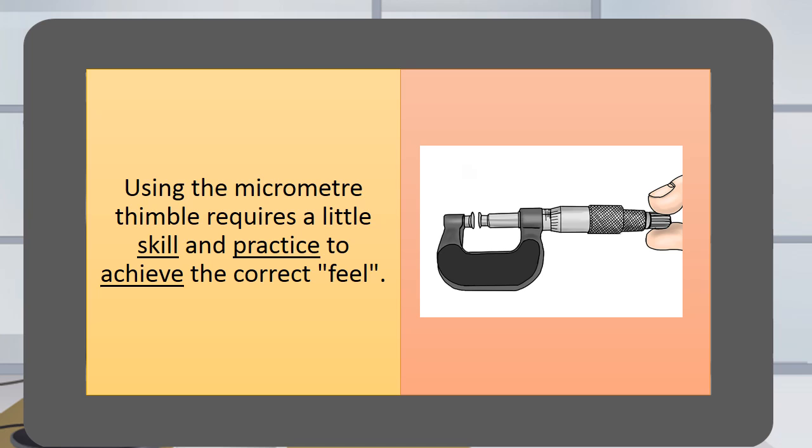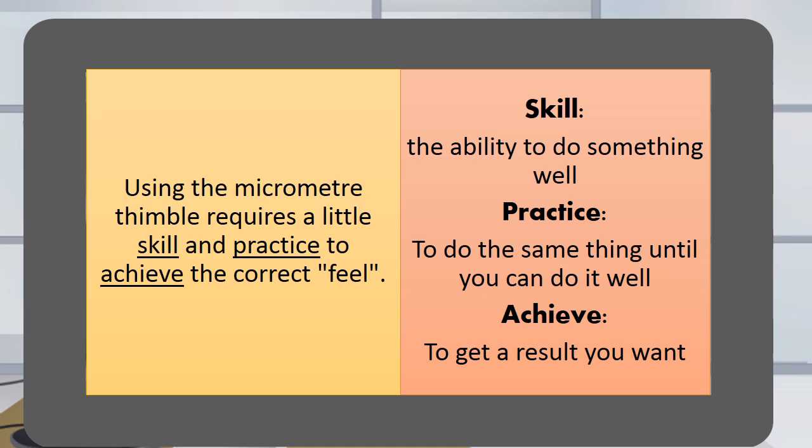Using the micrometer thimble requires a little skill and practice to achieve the correct feel. Skill is the ability to do something well. Practice is to do the same thing until you can do it well. Achieve means to get a result that you want.